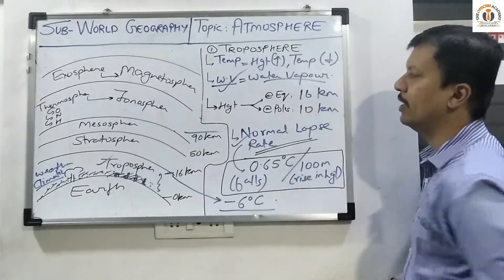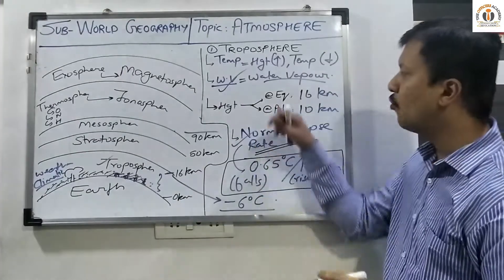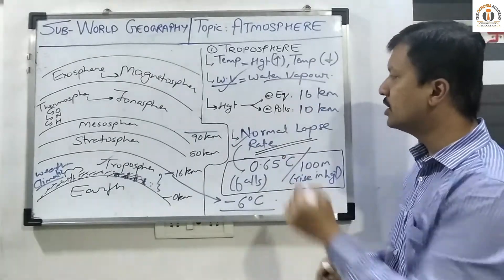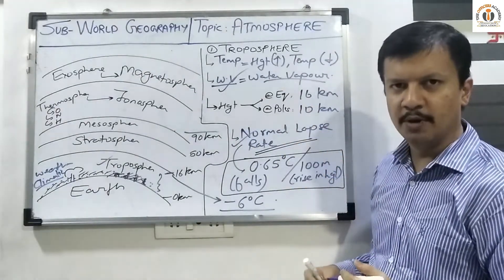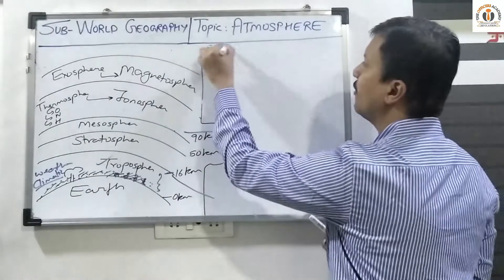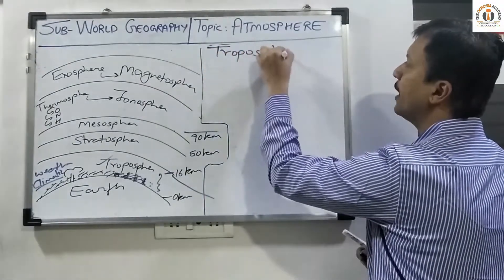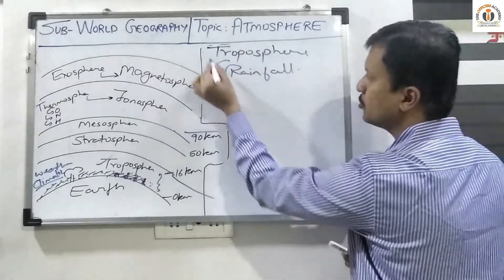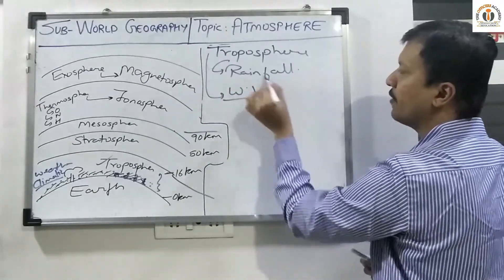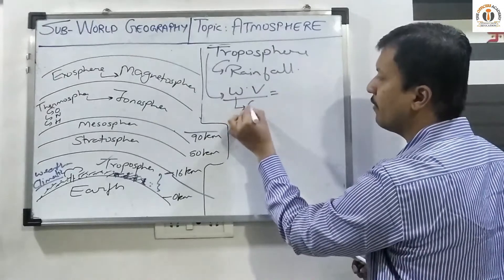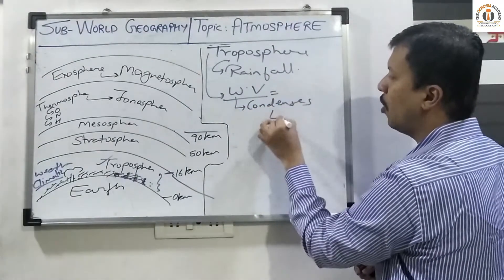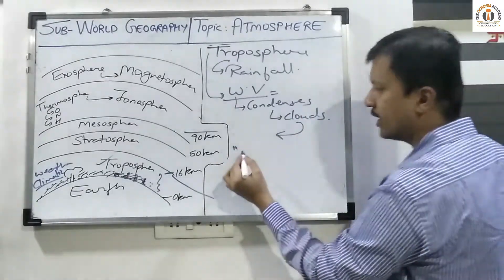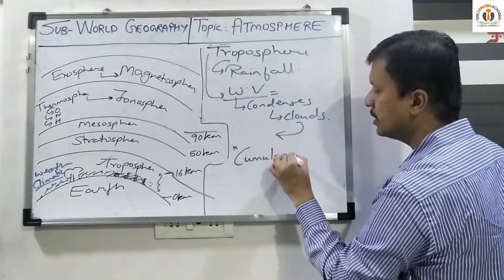Take it as an assignment to find out why the troposphere ranges from 0 to 16 kilometers at the equator and from 0 to 10 kilometers at the poles. Troposphere is also important with respect to the phenomenon of rainfall and precipitation, because the highest amount of water vapor is available in the troposphere. This same water vapor condenses to form clouds, and the rain-bearing clouds are called cumulonimbus clouds.